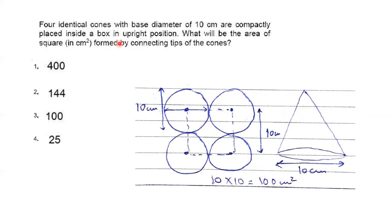Four identical cones with base diameter 10 centimeters are compactly placed inside a box in upright positions. When you look at these four cones from above, you see their tips arranged in a square pattern. The distance between adjacent tips is 5 + 5 = 10 centimeters (the diameter). So the square formed by connecting the tips has a side of 10 centimeters, giving an area of 100 square centimeters. Option three is correct.